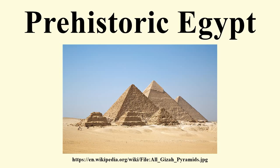The Maadi culture is best known from the site Maadi near Cairo, but is also attested in many other places in the delta to the Fayum region. Copper was known, and some copper objects have been found. The pottery is simple and undecorated and shows, in some forms, strong connections to southern Israel. People lived in small huts, partly dug into the ground. The dead were buried in cemeteries, but with few burial goods. The Maadi culture was replaced by the Naqada III culture, whether by conquest or infiltration is still an open question.